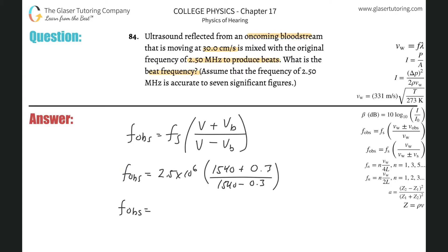So there's going to be 1540 plus 0.3 divided by 1540 minus 0.3, and then take that and multiply it by 2.5 times 10 to the 6th. I know it comes out to almost that value, but let's write down a lot of decimals. So, 2,500,974. That's the observed frequency.